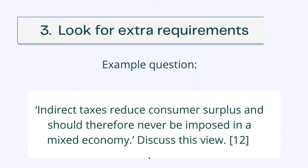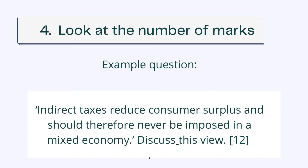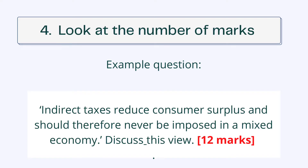Step 3: Look for extra requirements. The word 'and' is particularly important in a requirement. It is very easy to read the first part of a requirement and miss out on a further task later on. In this question, the first requirement is to explain how indirect taxes reduce consumer surplus. The second requirement is to discuss whether indirect taxes should never be imposed in a mixed economy. Step 4: Look at the number of marks. The command words should give a good idea of how much work is needed, but the number of marks will also help. In this question, the number of marks allocated is 12. It is important to practice questions to get an idea of how long certain questions take.